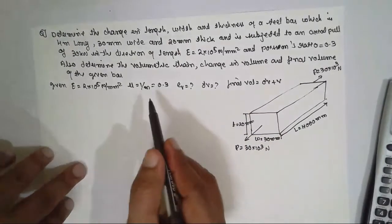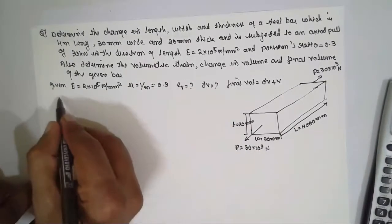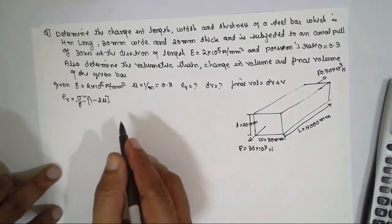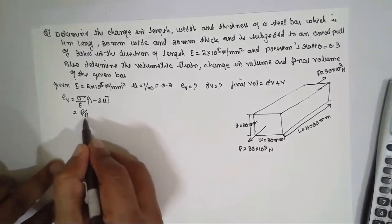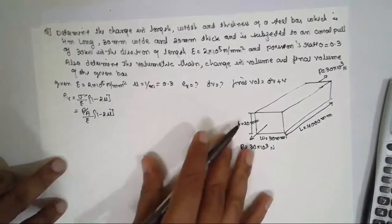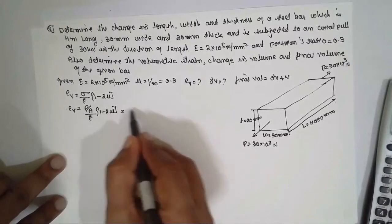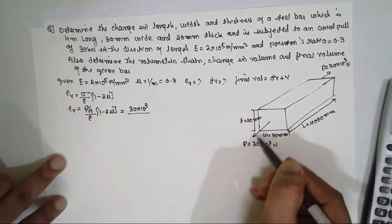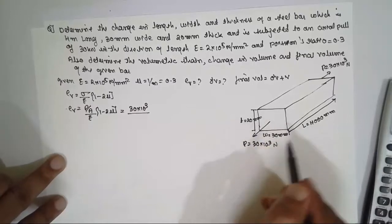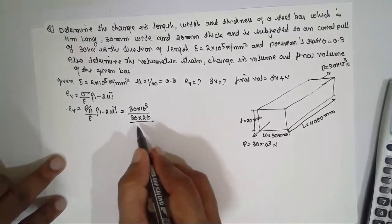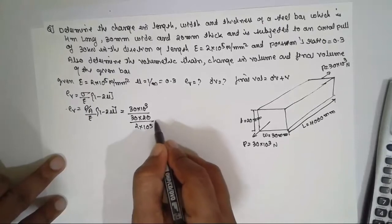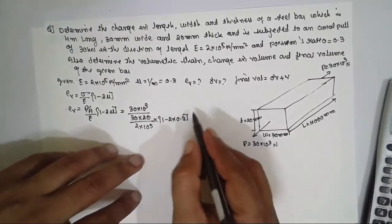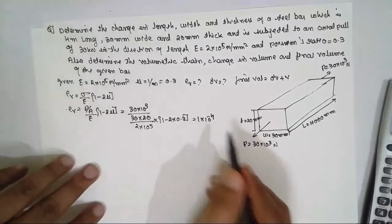Finding volumetric strain: Ev = (σ/E)(1 − 2μ) = (P/A)/E × (1 − 2μ). P = 30 × 10³, area = 30 × 20 (force acts over this cross-section). E = 2 × 10⁵, (1 − 2 × 0.3). Solving: Ev = 1 × 10⁻⁴. It is a strain, so there is no unit.